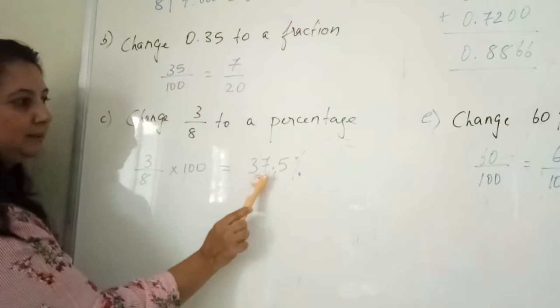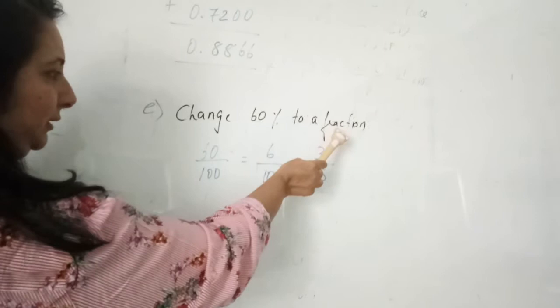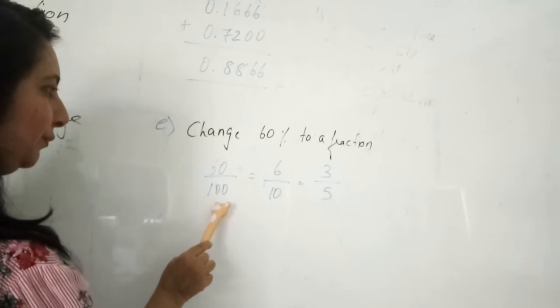Then, if you want to change a percentage to a fraction, you divide by 100. Here, 60%, which means 60 over 100. Let's simplify it further, so you get 3 over 5.